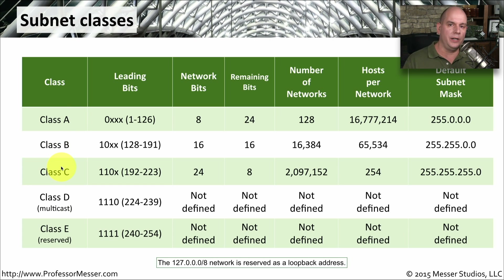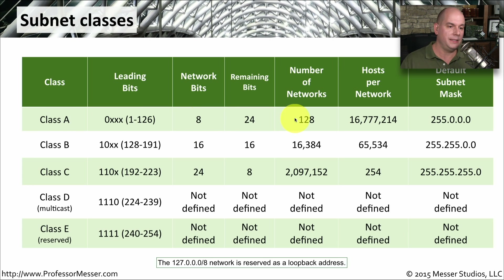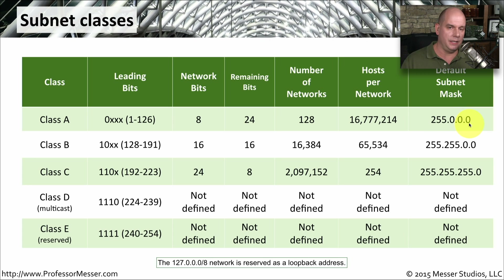Originally, these classes were defined automatically based on the leading bits of the IP address. If your IP address started with 1 to 126, it was a class A subnet, which means there were eight network bits and 24 host bits. That means you could have 128 networks and over 16 million hosts per network — it's a very large network. It would be very unusual to find anything close to that number on a single subnet. The default subnet mask for a class A is 255.0.0.0. Class B meant the IP address started with 128 through 191, with network and host bits divided 16 and 16.